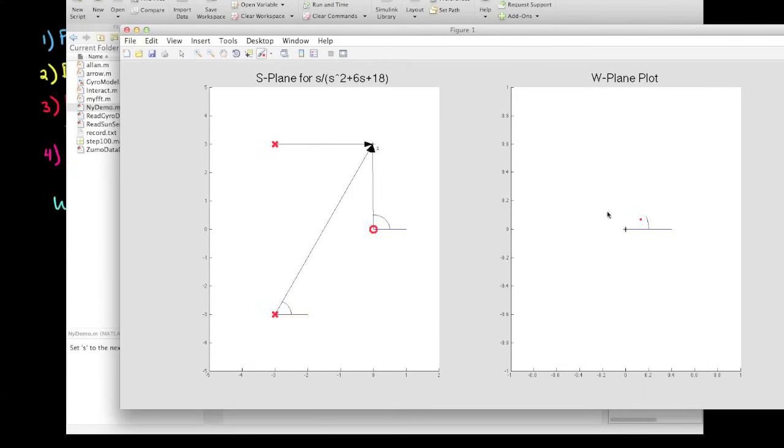Now if I sort of trace out a contour with this point, but make sure not to include any pole or zero, then the addition and subtraction of the phases will never go around 360 degrees. And you can see this very clearly on the w-plot, that the phase just sort of hovers between 150 degrees and 210 degrees.